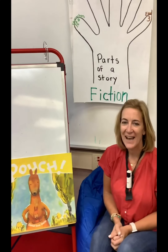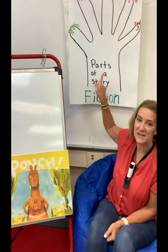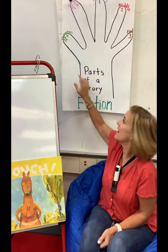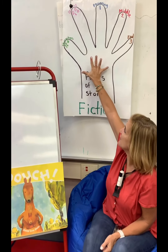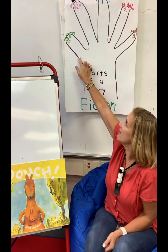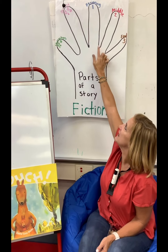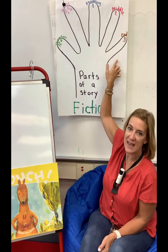Hi kindergartners. We've been talking about the parts of a story, and there are five parts of a story: character, setting, beginning, middle, end.